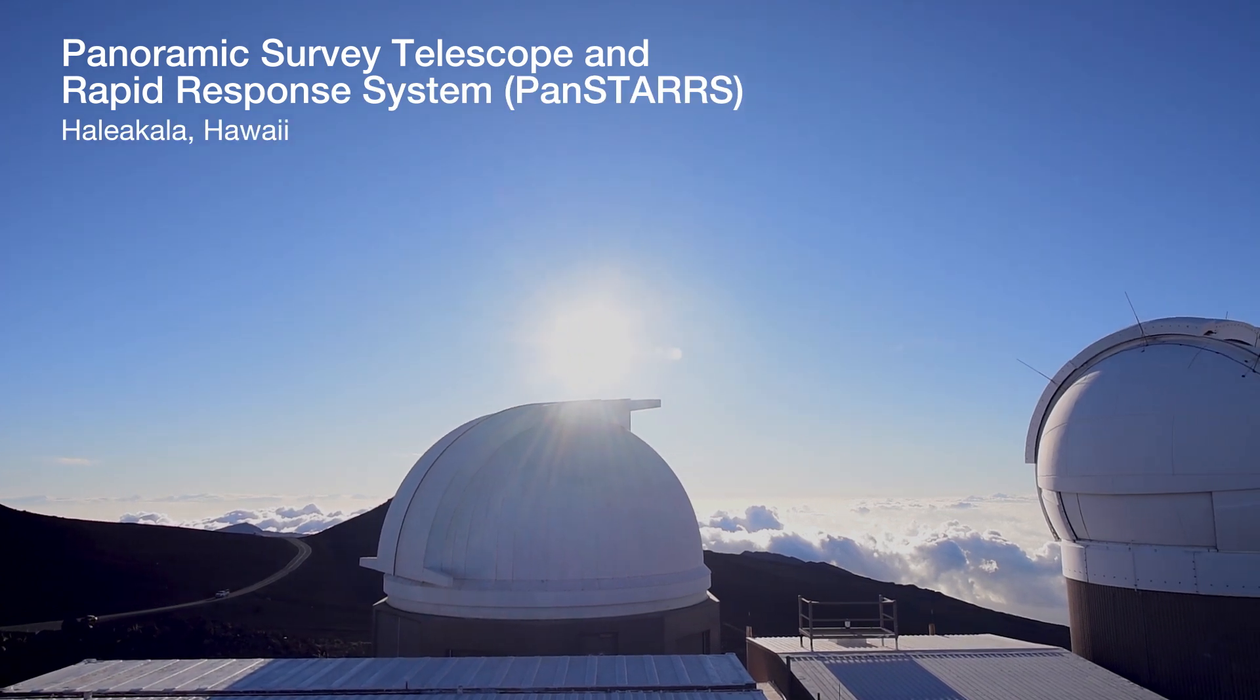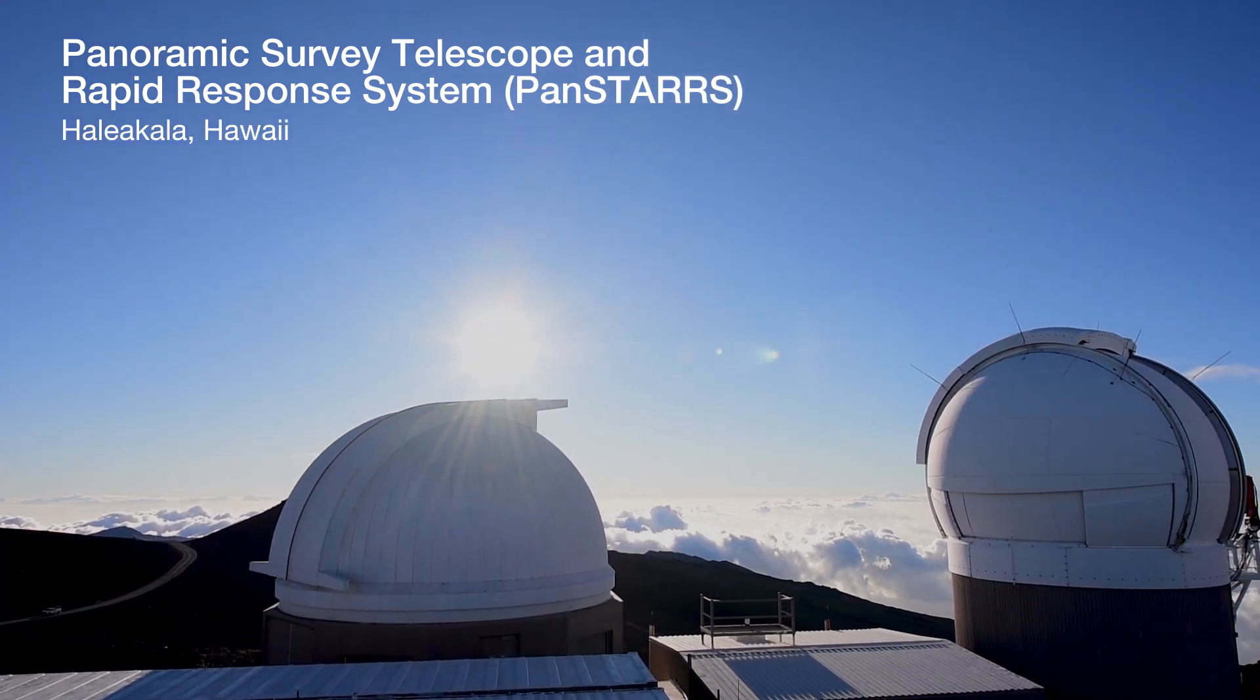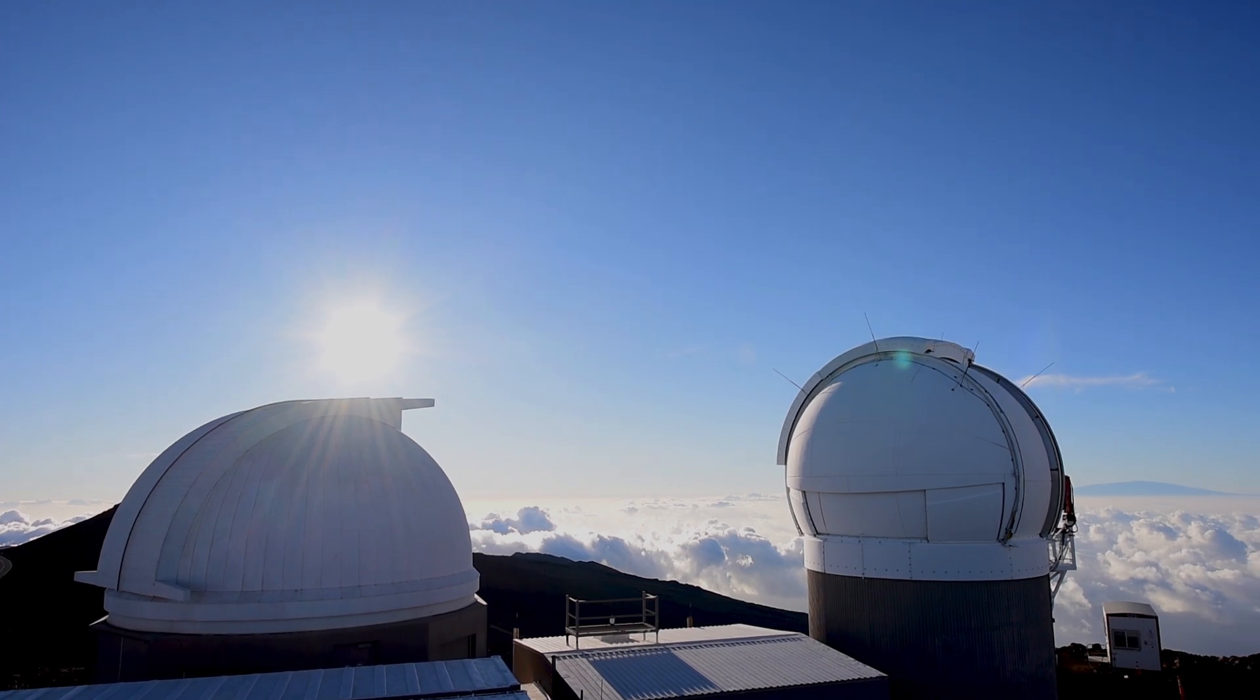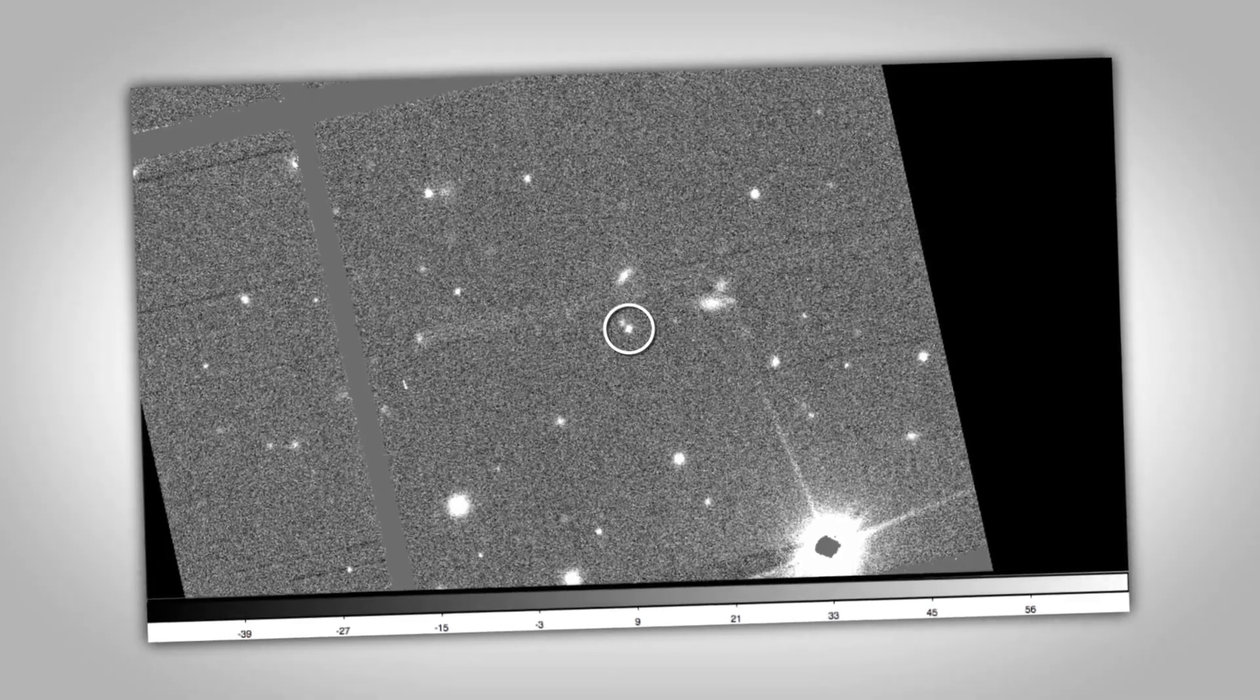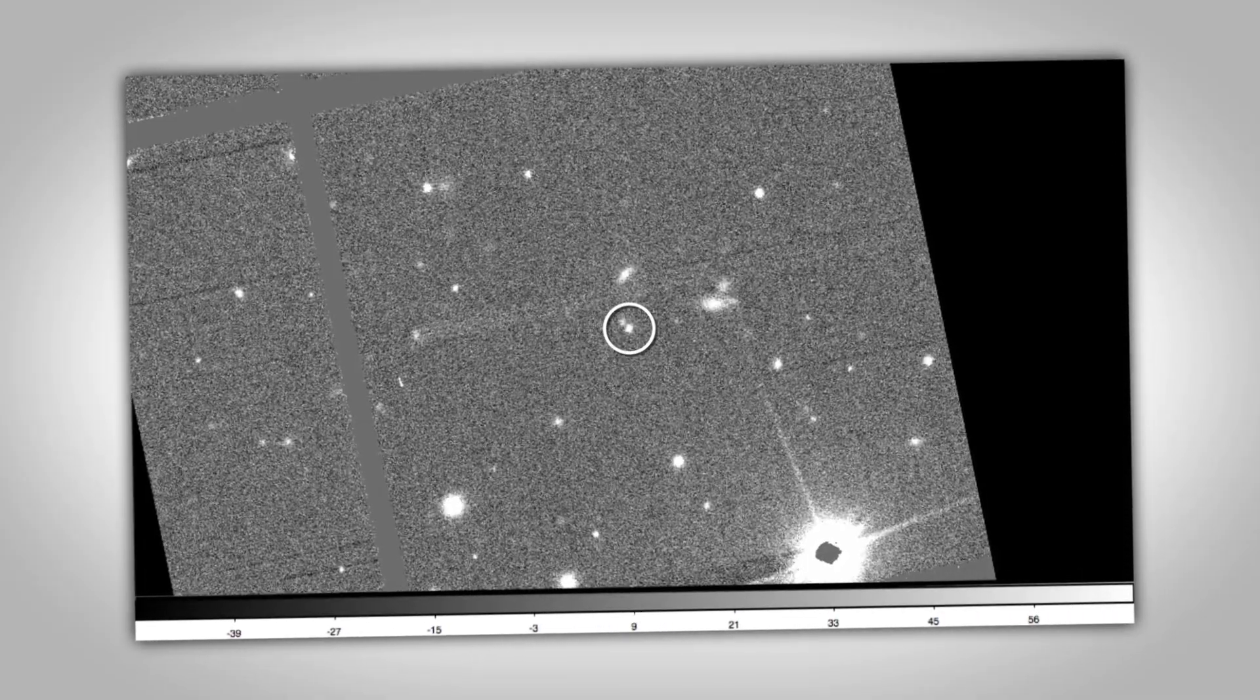We've probably seen about a million asteroids in the last seven years that Pan-STARRS has been operating. It's like picking a needle out of a haystack. We're looking for distinctive motion, and when we see distinctive motion in asteroids, we report them to the Minor Planet Center.